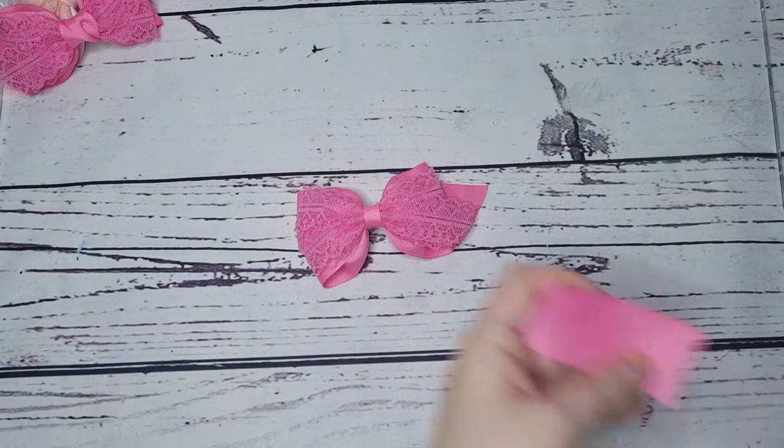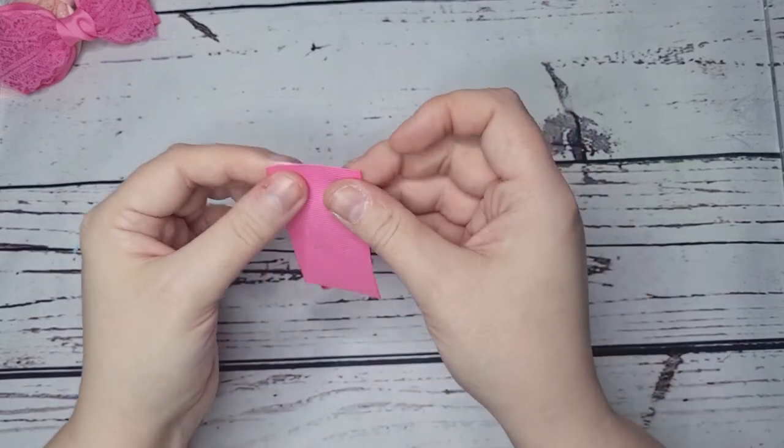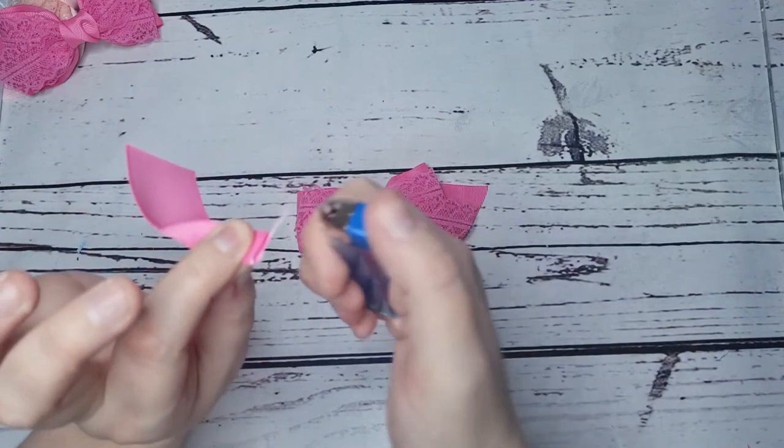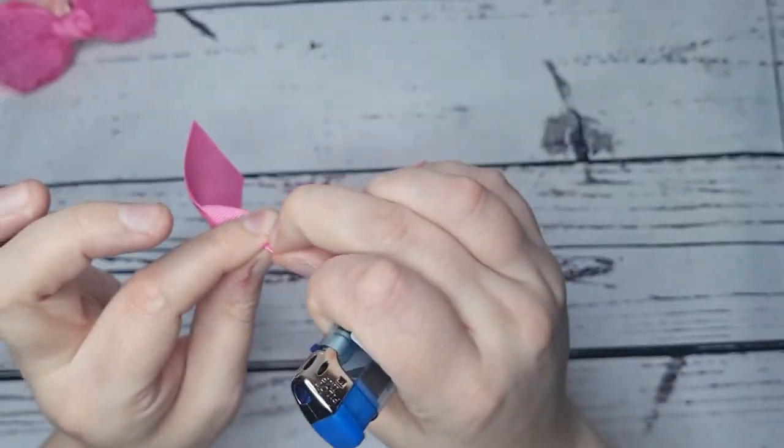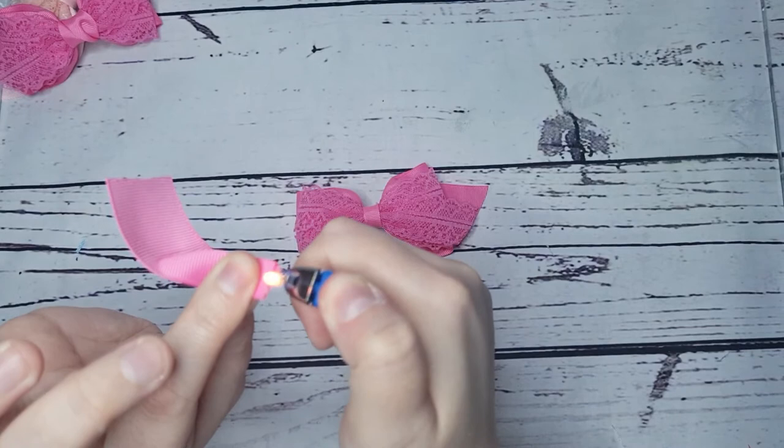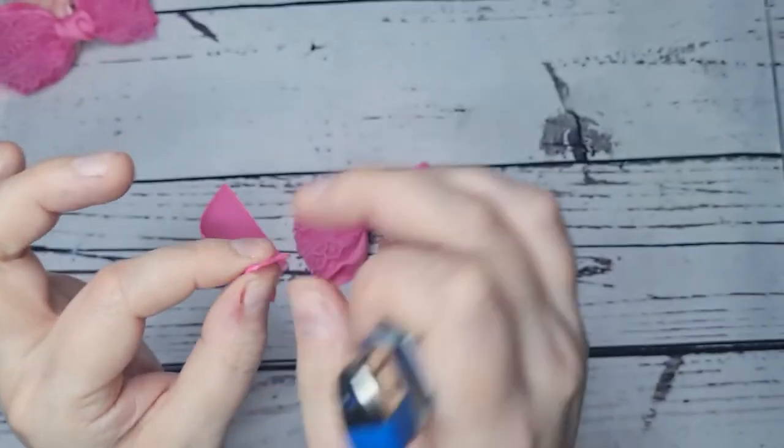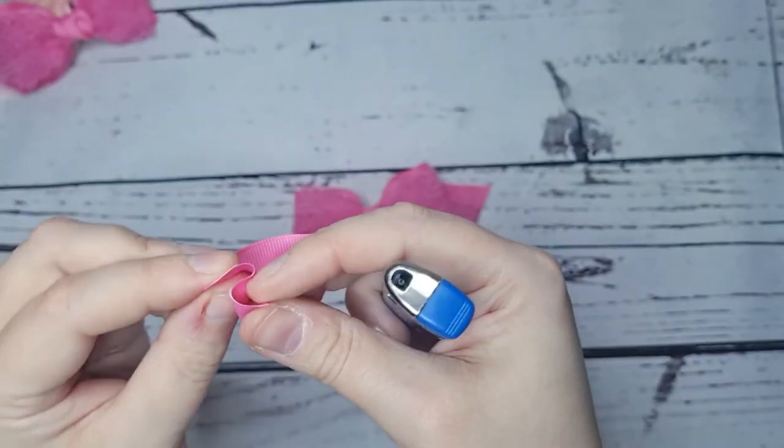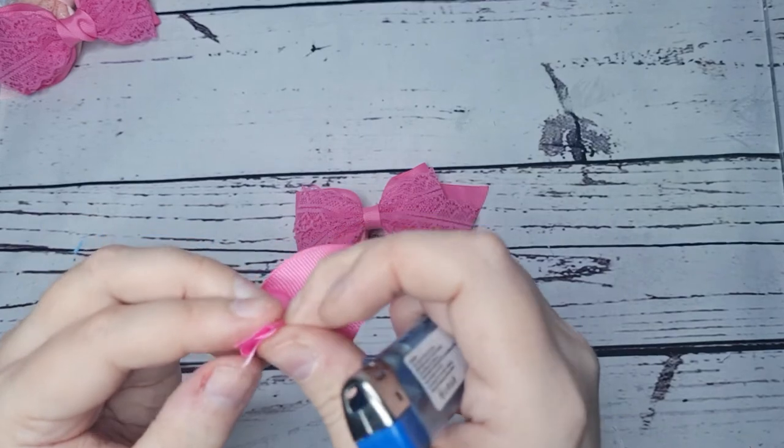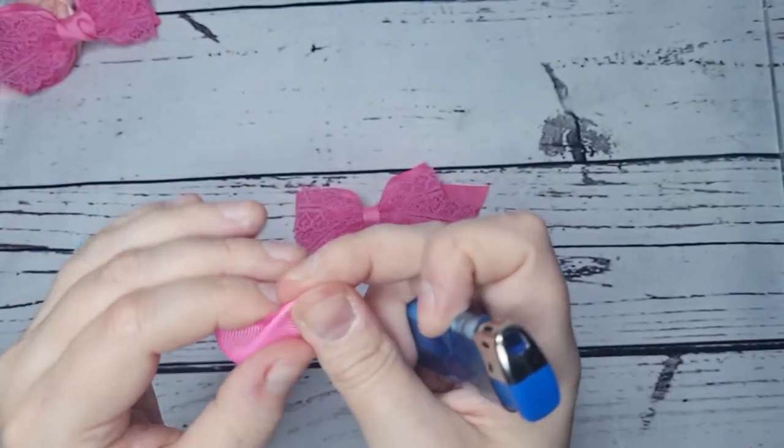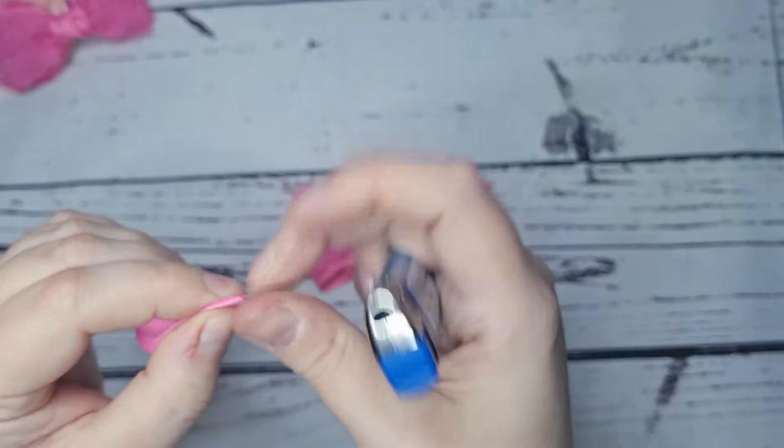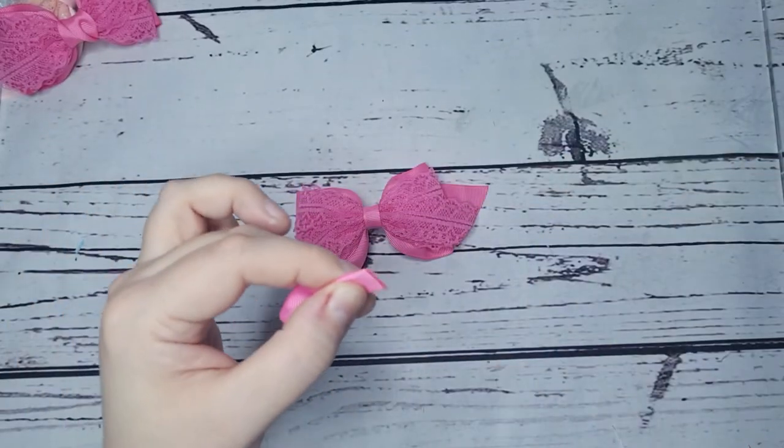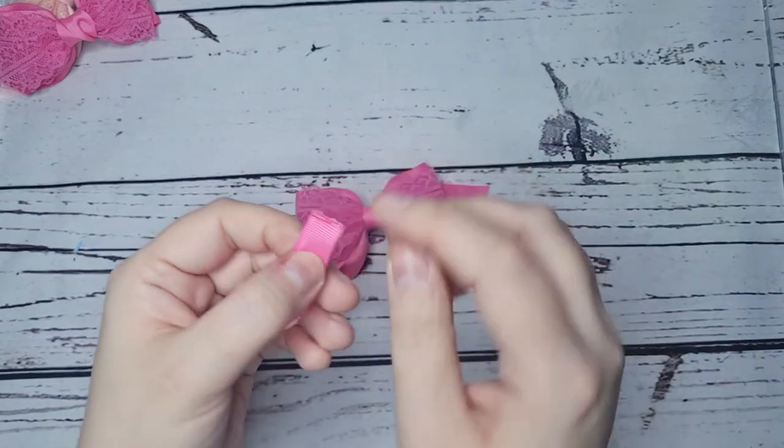Then we're just going to do the scrunch and I'll use 1.5 inch ribbon as well. Just do an S shape there, nap that together. Mind your fingers so you don't have any crafting related injuries like myself. Opposite way on this side.